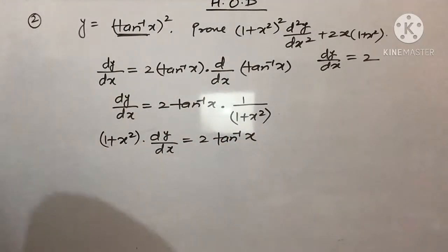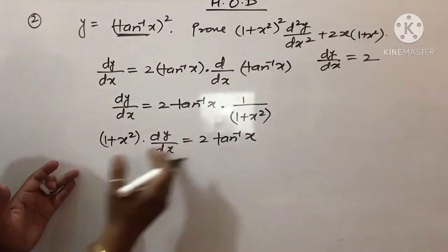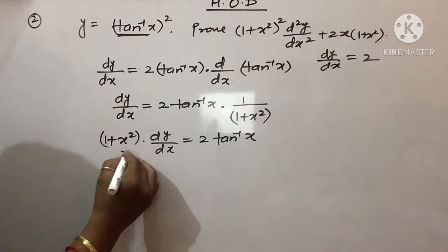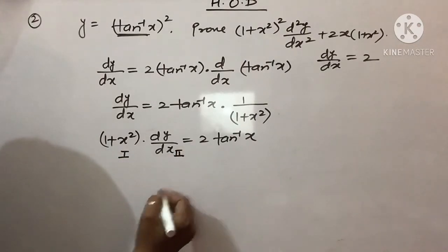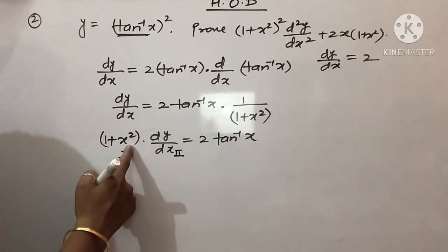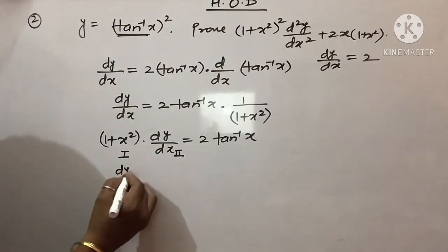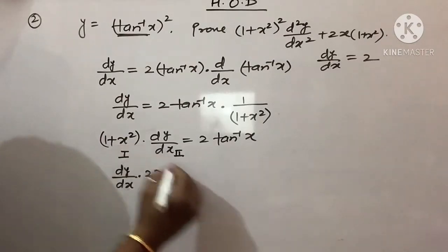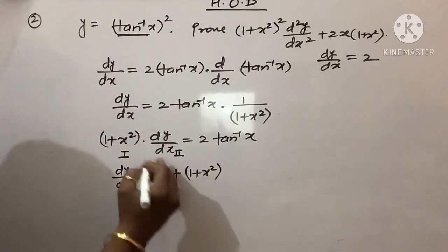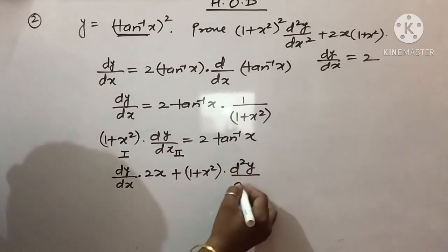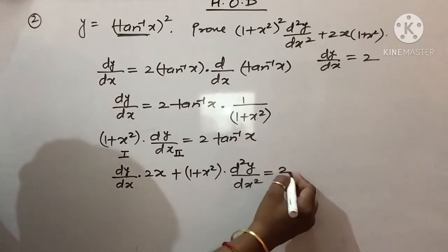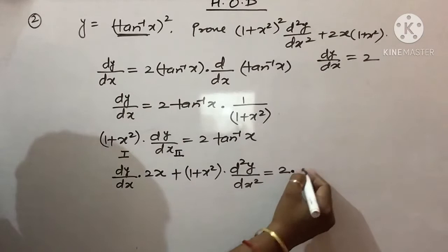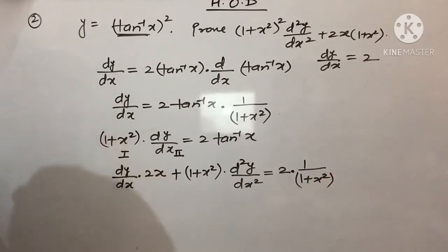Aur maine pehle aap logo ko bataya hua hai implicit function ke baare mein. Toh ab aapko karna kya hai ki is function ko jo aapke saamne likha hua hai isko dono taraf differentiate kar den. Toh jab aap isko dono taraf differentiate karenge toh ye first function hoga, ye second function hoga. Jab main is function ko differentiate karunga: dy/dx bahar rahega aur (1 + x²) ka differentiation hoga 2x, plus (1 + x²) apni jagah rahega, dy/dx ka differentiation hoga d²y/dx², equals to...